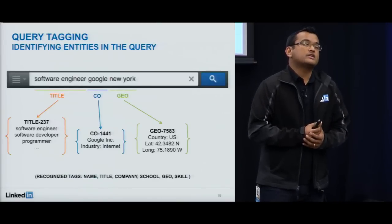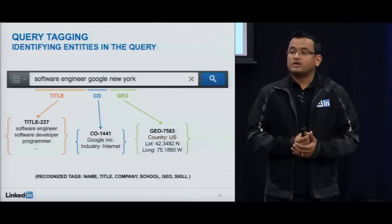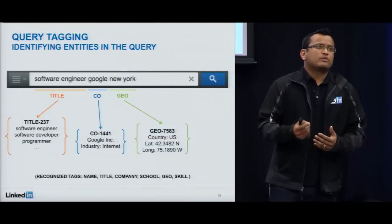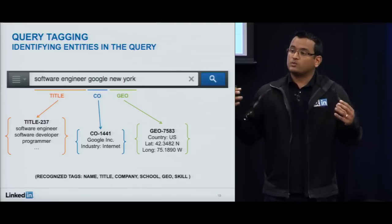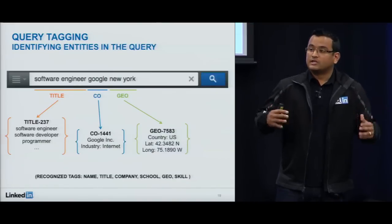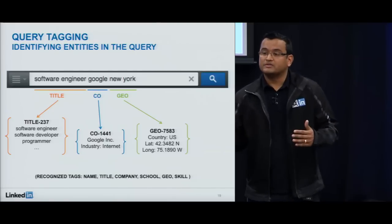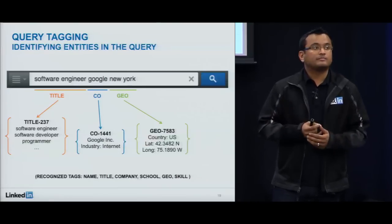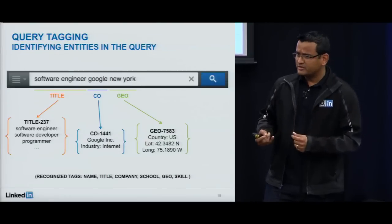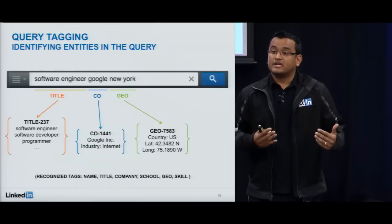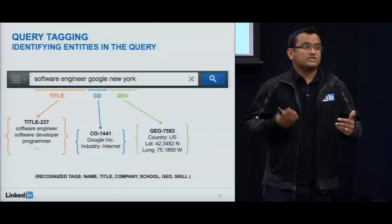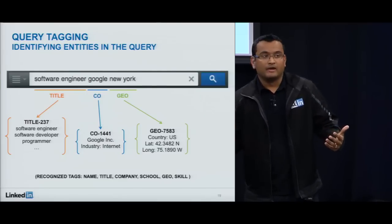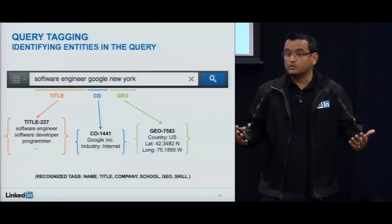Next is query tagging, a very important component of query understanding. The idea is that given a query — just a sequence of words — we want to break it down into logical units and identify what every unit means. For example, 'software engineer' is a title, 'Google' is a company, 'New York' is a location. We also go one step further and link these tags to actual entities we know more about. For instance, the title 'software engineer' links to an entire cluster of related titles: software developers, programmers, and so on — information we can use for query expansion.